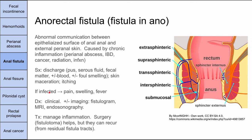Next is the anorectal fistula — an abnormal communication between the epithelialized surface of the anal canal and the external perianal skin. These are tracks visible here in blue, and there are many different kinds. For instance, an extra-sphincteric fistula goes directly from above the pectinate line to the outside. These are generally caused by chronic inflammation in the anorectal region, which can be caused by an abscess, IBD like Crohn's disease, cancer, radiation, or infection.